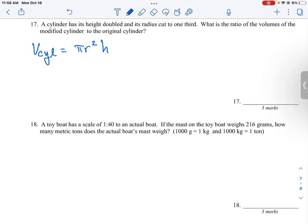And then it says here, if we double the height and the radius is cut to one-third, what is the ratio of the volumes of the cylinders?